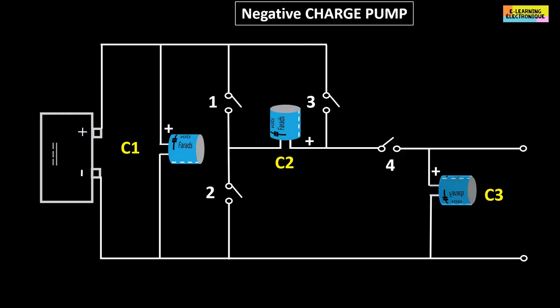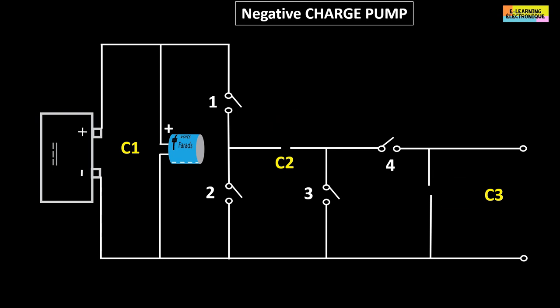To obtain a negative voltage at the output, the circuit is rearranged as follows. The switch number 3 is moved according to this configuration. The polarity of capacitors C2 and C3 is reversed. The closing sequence of the switches will also be different.